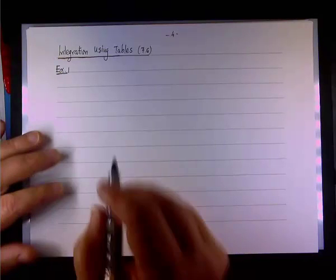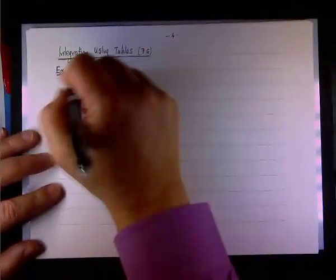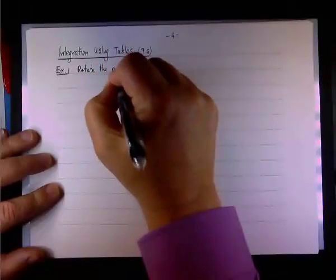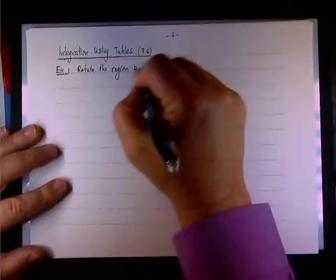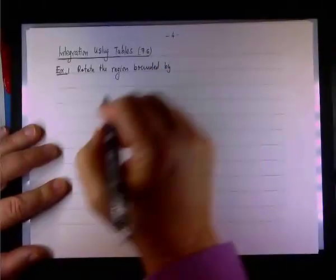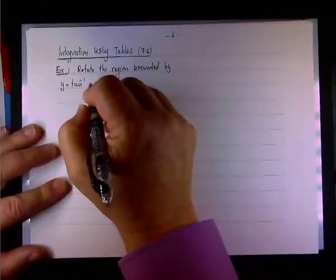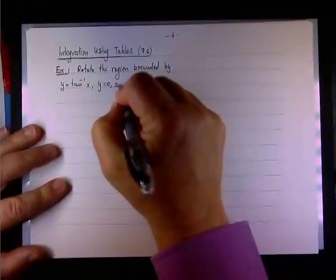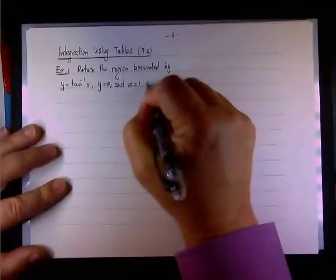The first example: rotate the region. Going back to volume of revolution, rotate the region bounded by y equals the inverse tangent of x, y equals 0, and x equals 1 about the y-axis.